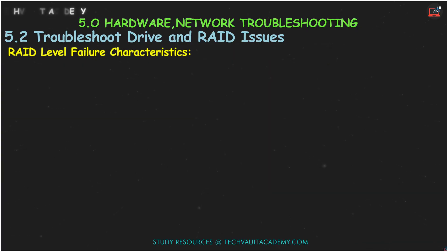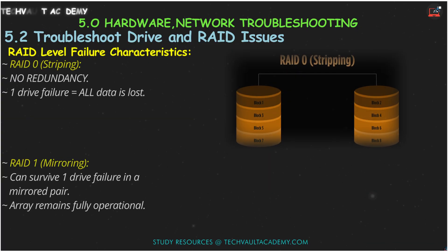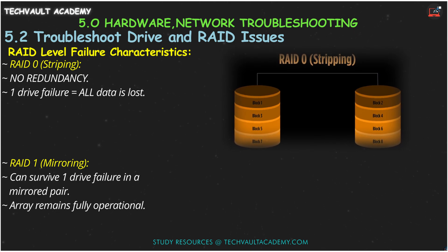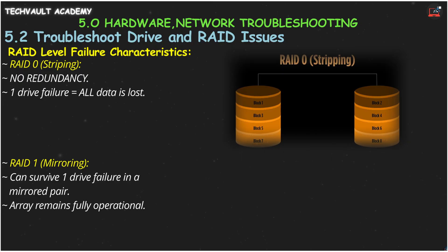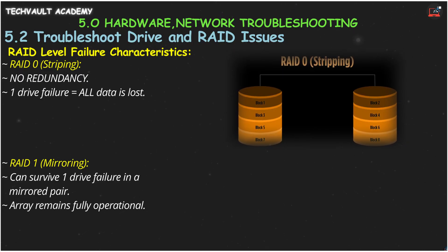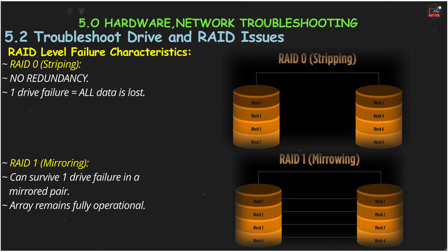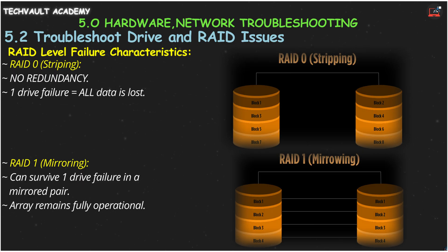Understanding the RAID level is key to recovery. RAID 0 striping uses at least two drives for speed, but has zero redundancy — if one drive fails, the entire array is broken and all data is lost; your only recovery is from a backup. RAID 1 mirroring uses at least two drives for redundancy and creates an exact copy. If one drive fails, the array continues to run perfectly — just replace the bad drive and the mirror will rebuild.